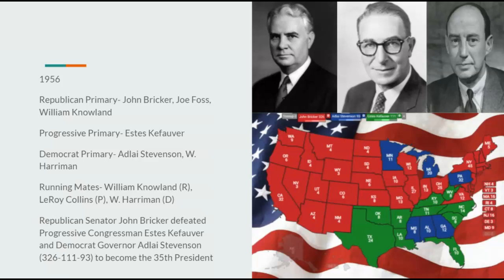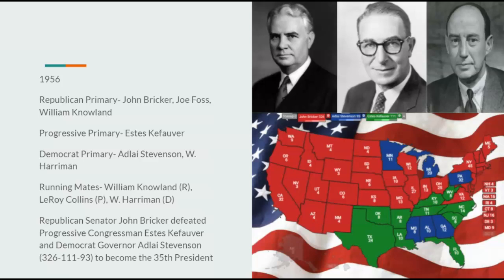Going on to 1956, John Bricker would run for the Republicans. He would not do well in the South, but would barely win Virginia. Estes Kefauver would be the Progressive nominee, doing very well in the South. Democrats decided to nominate a Northerner — it backfires as Kefauver wins the South. Republican Senator John Bricker would defeat Progressive Estes Kefauver and Democrat Governor Adlai Stevenson, 326 to 111 to 93, to become the 35th President.